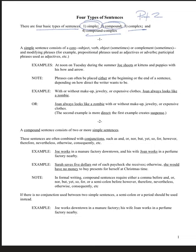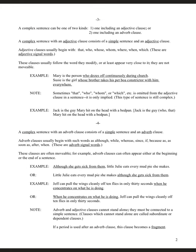So on this handout we have simple sentences, compound sentences, and then the next page is complex sentences. There can be two kinds of complex sentences: one that includes an adjective clause, and one that includes an adverb clause. Adjective clauses usually begin with signal words: that, who, whose, whom, where, when, which.